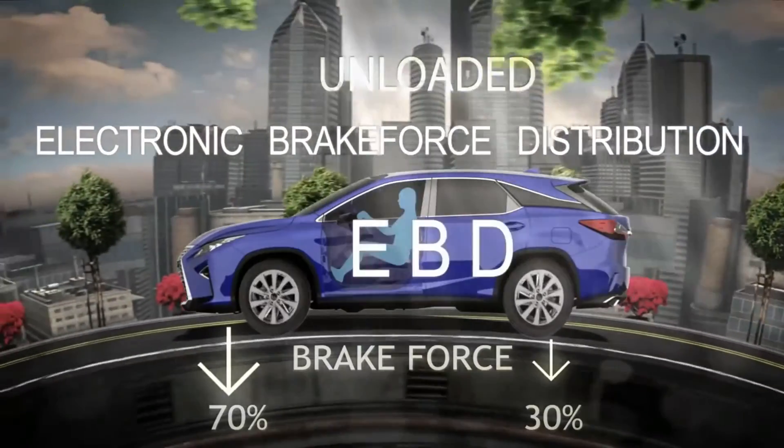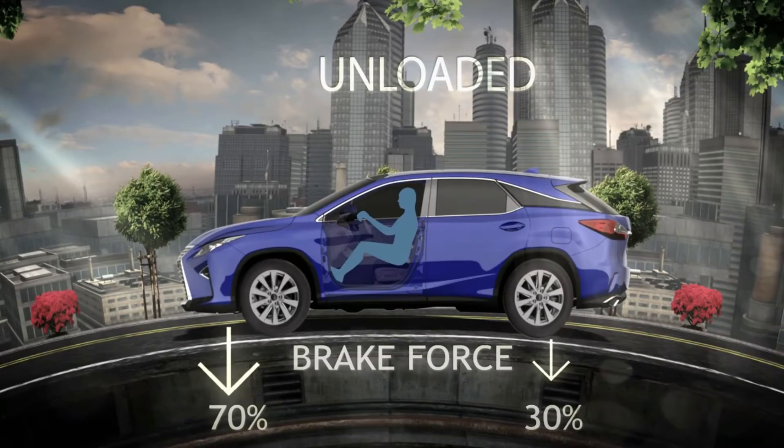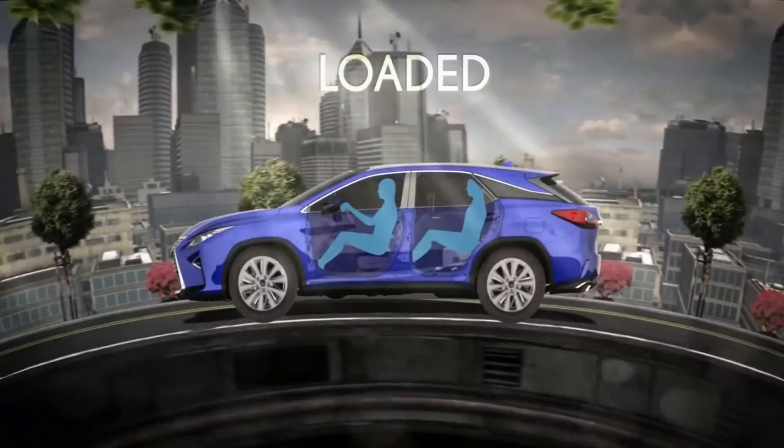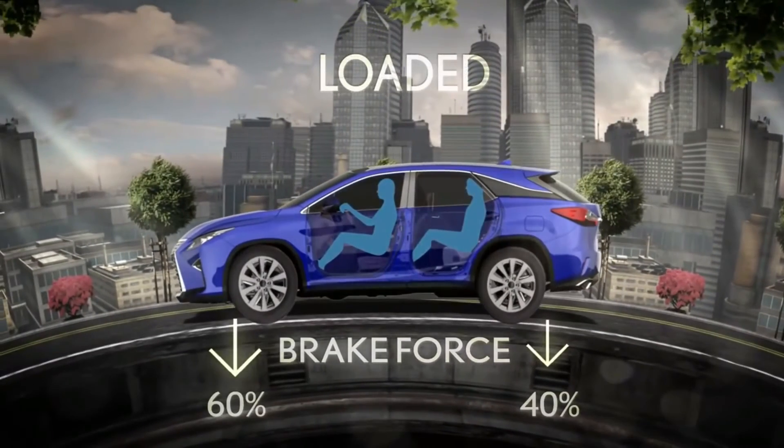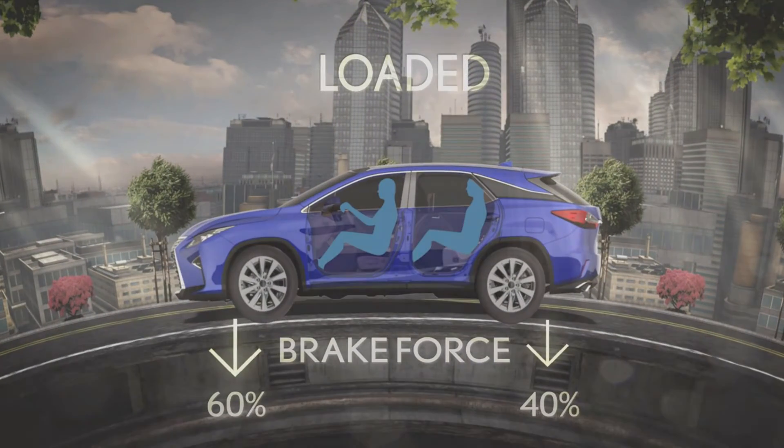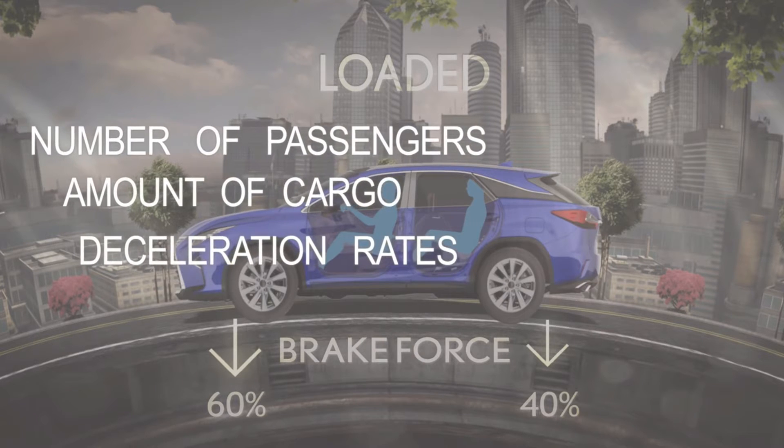Electronic Brake Force Distribution, or EBD, reduces brake pressure at lightly loaded wheels that are more prone to skid. EBD can help provide optimal brake proportioning to each individual wheel based on driving conditions, such as the number of passengers, amount of cargo, deceleration rates, and when cornering.